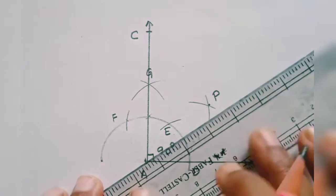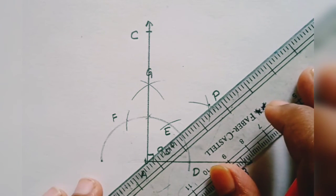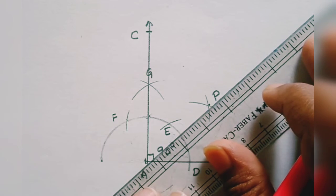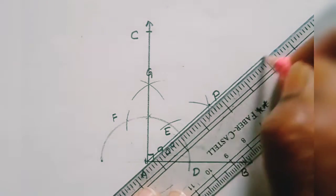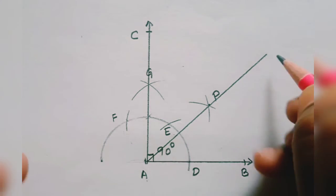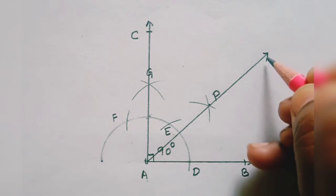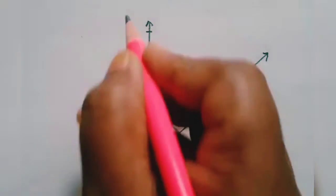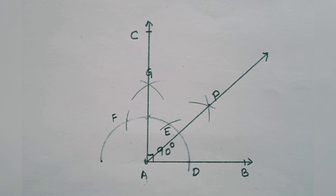And now you can draw a line. Just draw a line. So now this is the bisector. Now AP is bisecting angle BAC. So now we will see what is the measure of angle BAP.